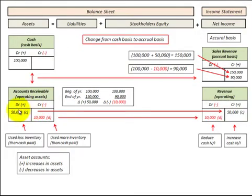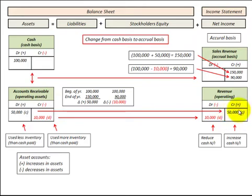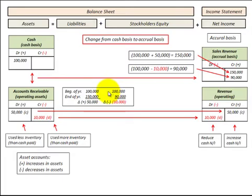Comparing via journal entry: we take the accounts receivable debit amount and credit it to our revenue account, increasing revenue by $50,000 for that increase in accounts receivable. Adding that revenue increase of $50,000 to the cash basis of $100,000 gives us sales revenue of $150,000 for the year. We increased our cash net income by the $50,000 recognized from accounts receivable.